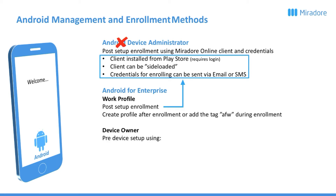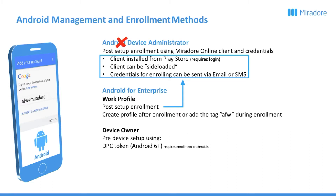Device Owner enrollment is done pre-device setup, so instead of going through the entire setup process, you will start from the welcome screen and either use the DPC token method, available from Android 6 and newer. This means you start the setup wizard, but once you get to the step where it asks you to add your Google account, instead of adding an email address, you type 'afw#Mirador' and that will start the Device Owner mode enrollment. This does require enrollment credentials from Mirador Online, which none of the other Device Owner mode enrollments require.